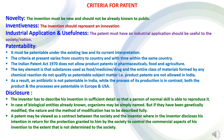The fifth criteria is disclosure. The inventor has to describe his invention in sufficient detail so that a person of normal skill is able to reproduce it. In case of biological entities already known, organisms may be simply named. But if they have been genetically modified, the nature and method of modification has to be described fully. A patent may be viewed as a contract between the society and the inventor, wherein the inventor discloses his invention in return for the protection granted to him by the society to control the commercial aspects of his invention.